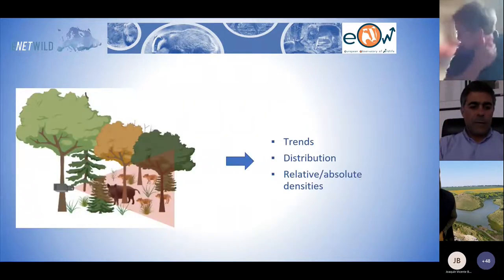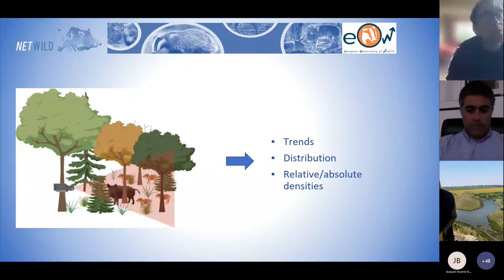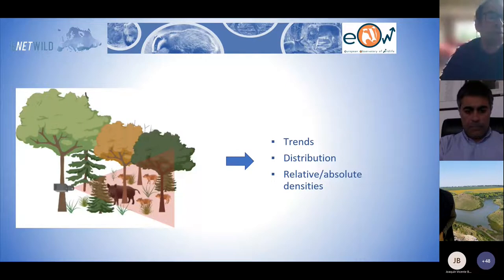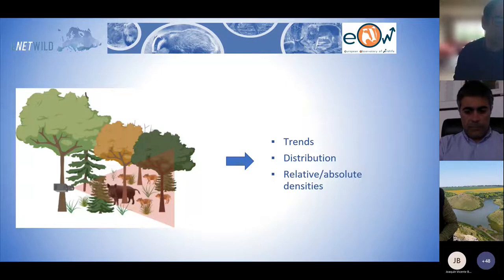The global aim is obvious: we would like to get from camera trapping and seeing animals in the field towards trends, mapping distributions, but the main focus of today is also to get to densities — both absolute and relative densities.